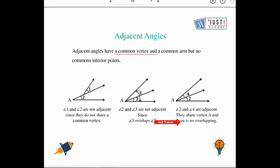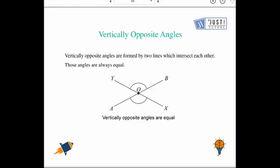Let's talk about vertically opposite angles. Vertically opposite angles are formed by two lines which intersect each other. If we talk about line XY and AB, they intersect at point O. So we can say that angle YOB will be equal to angle AOX because these are vertically opposite angles, and that's why they are both equal.